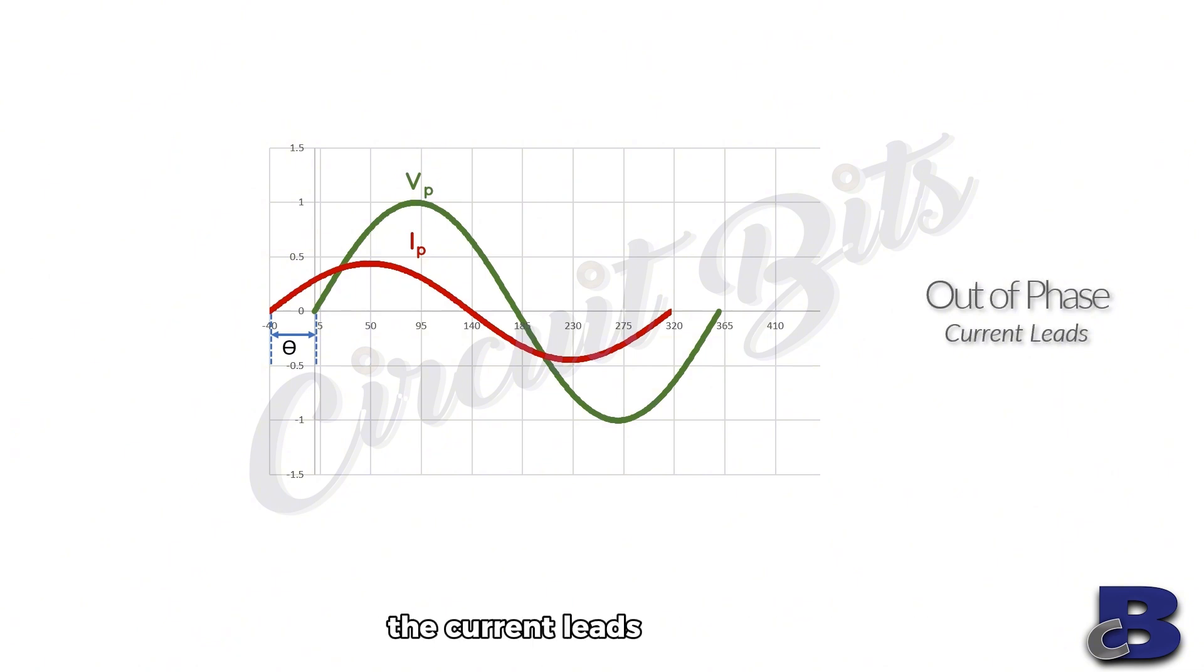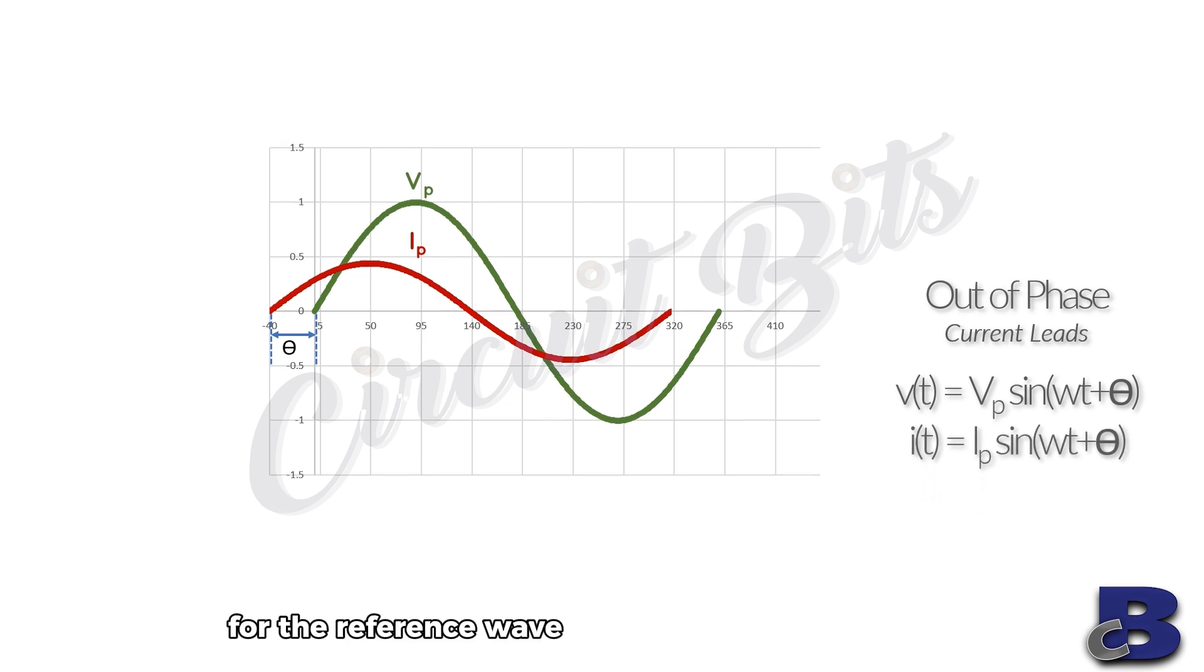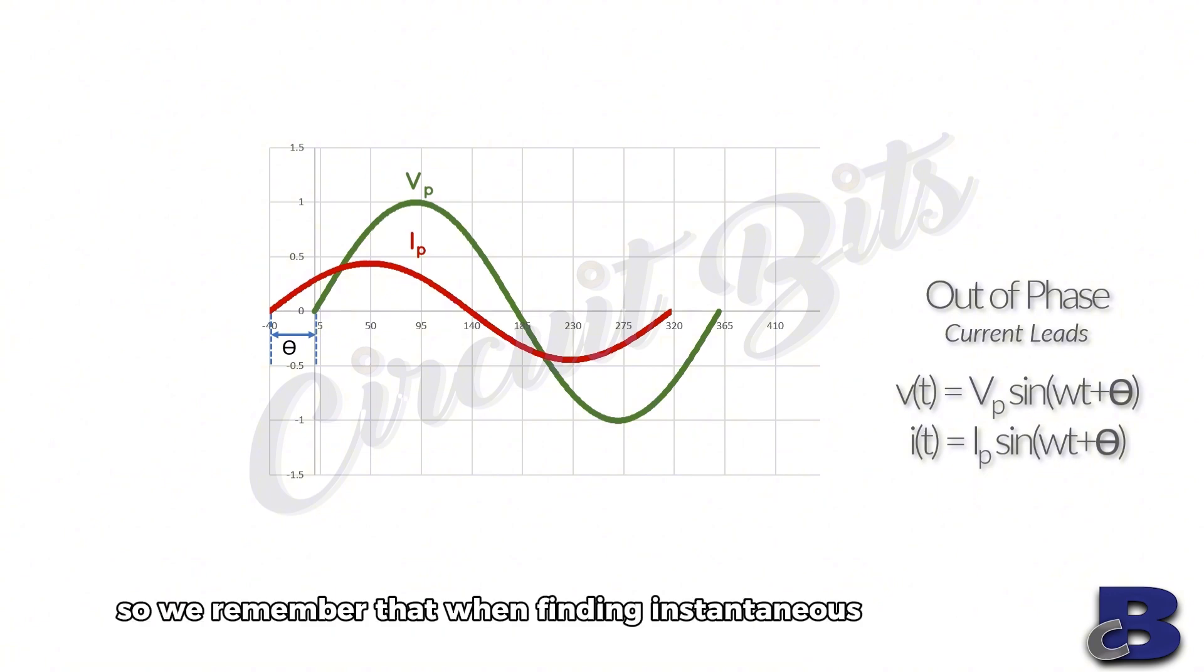The current leads the voltage. To find instantaneous voltage in the case of out-of-phase waves, we use the formula v with respect to t equal to Vp sin(ωt + θ) for voltage. While for current, we have i(t) equal to Ip sin(ωt + θ). For the reference wave, we know theta equals zero. So we remember that when finding instantaneous voltage for the reference wave,